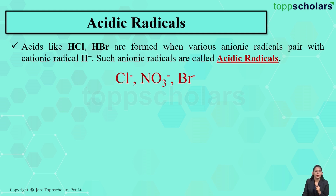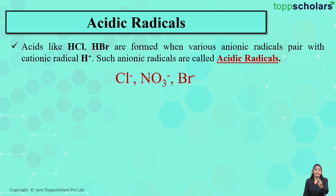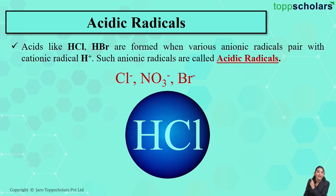For example, we have Cl⁻, NO3⁻, and Br⁻ — these are said to be acidic radicals. Let's take Cl⁻ first: it is an anion, a negatively charged ion. Cl⁻ pairs up and combines with the H⁺ radical, that is the cationic radical, resulting in the formation of HCl — hydrochloric acid. So here we get an acid.